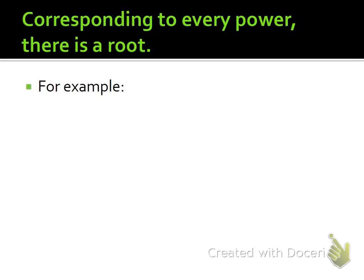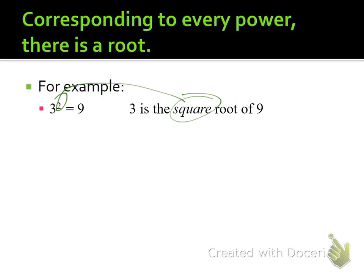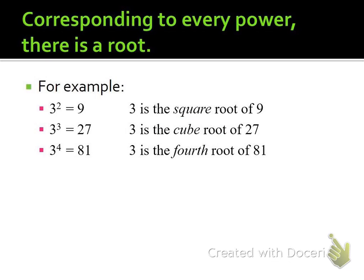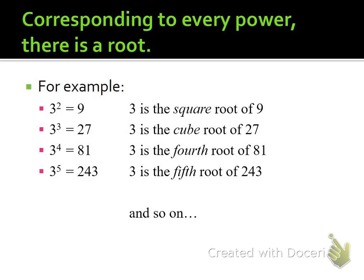First off, squares and square roots are inverses. When you square three, you get nine, and when you square root nine, you get three. You're looking for a number times itself that gives you the radicand. We have a lot of other exponents besides squaring — we can cube a number, so to undo cubing we cube root. Same with fourth power: to undo it, we do the fourth root. Fifth root undoes raising to the fifth power, and so on.